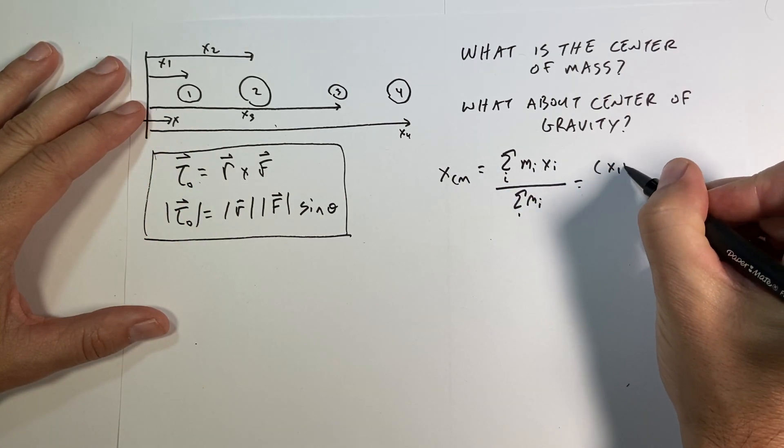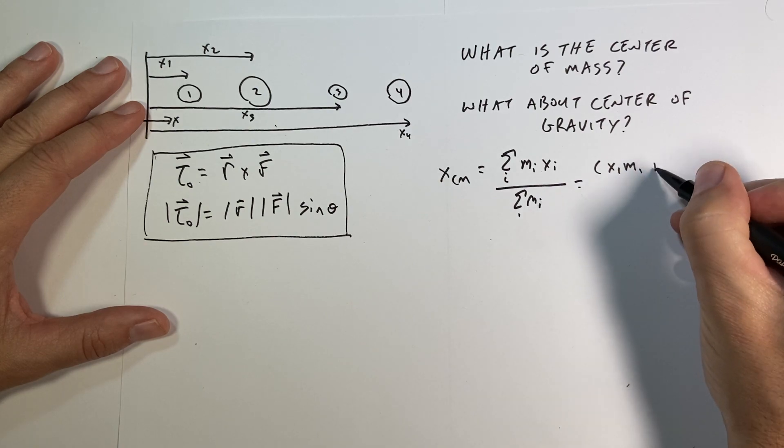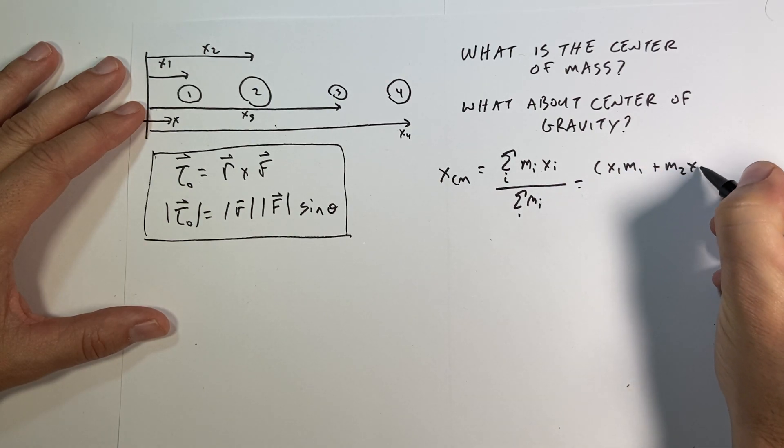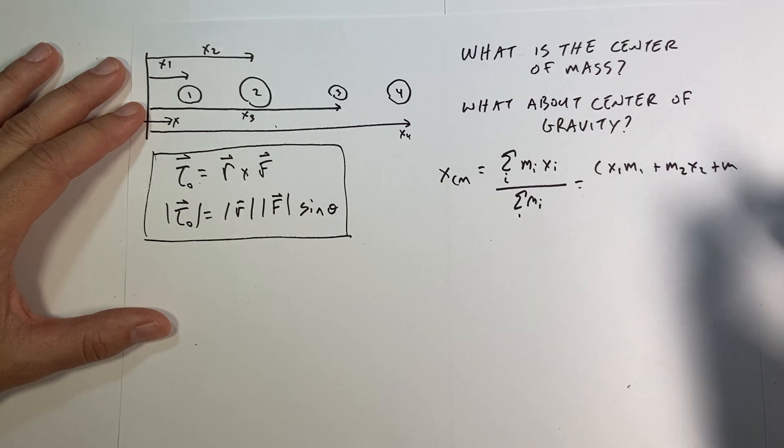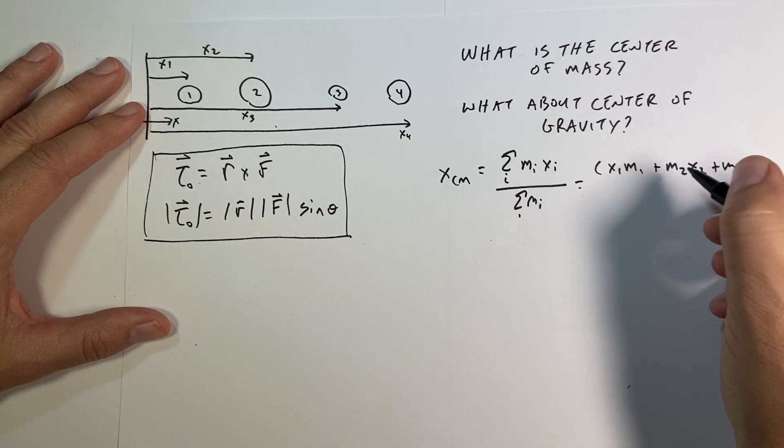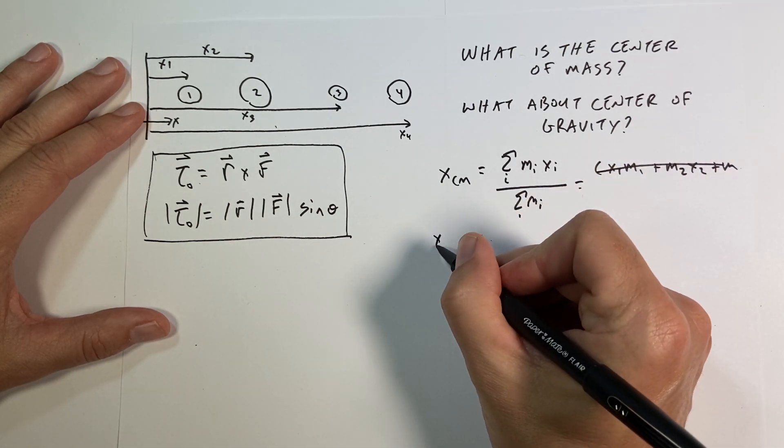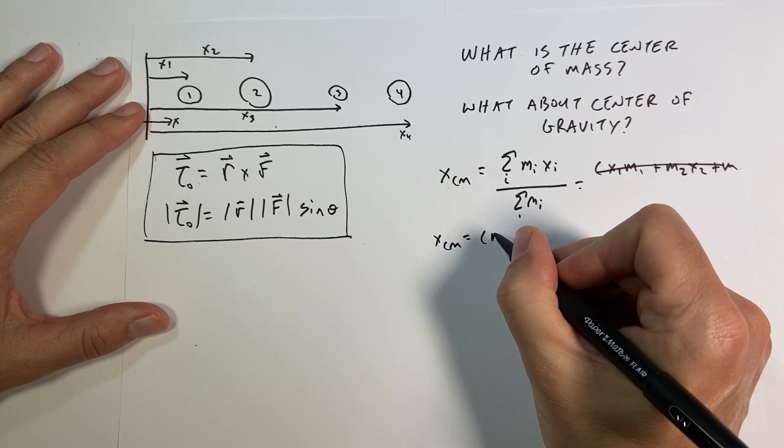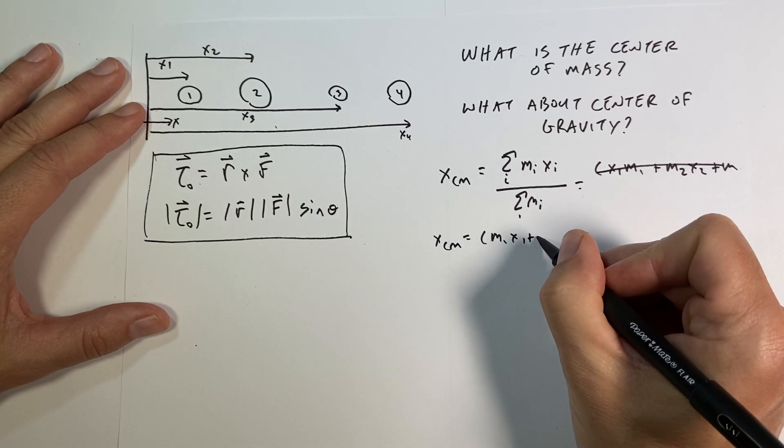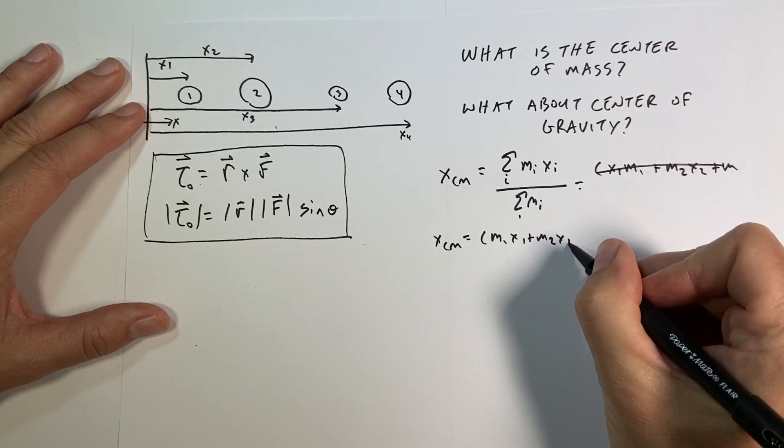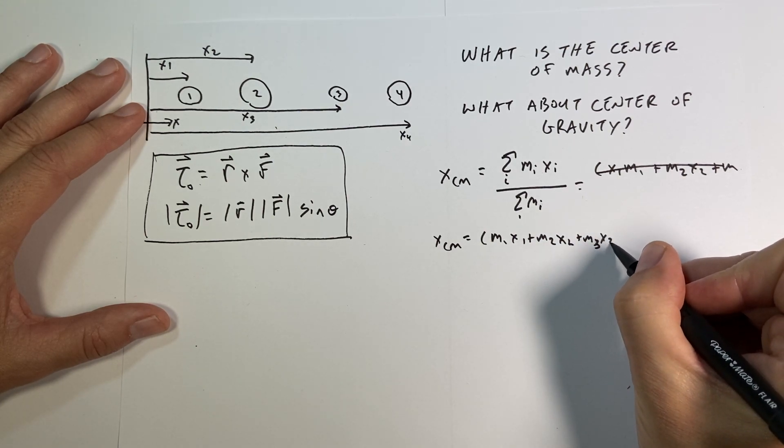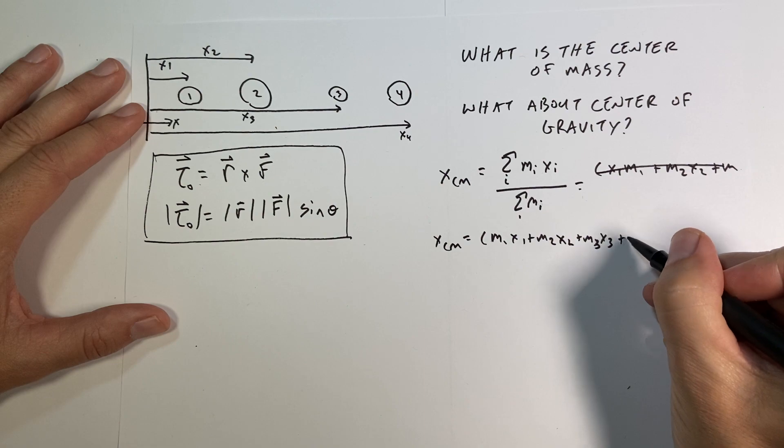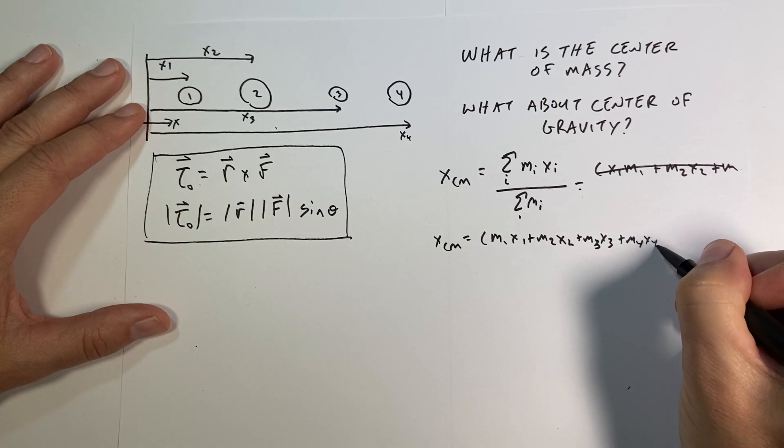So this would be X1, M1 - I switched that around - plus M2 X2, plus M3 X3, plus M4 X4. X center mass equals M1 X1 plus M2 X2 plus M3 X3 plus M4 X4.